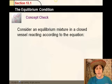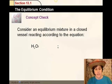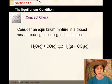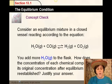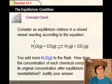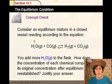Consider an equilibrium mixture in a closed vessel reacting according to this equation. Water plus carbon monoxide yields hydrogen and carbon dioxide gas. You add more water to the flask. How does the concentration of each chemical compare to its original concentration after equilibrium is reestablished? If we have more water, that's going to shift the equilibrium to the right. Because if we have more reactant, and let's say that was the limiting reactant, and we get more of it, we can produce more products. So more hydrogen and CO2 will be produced as a result.